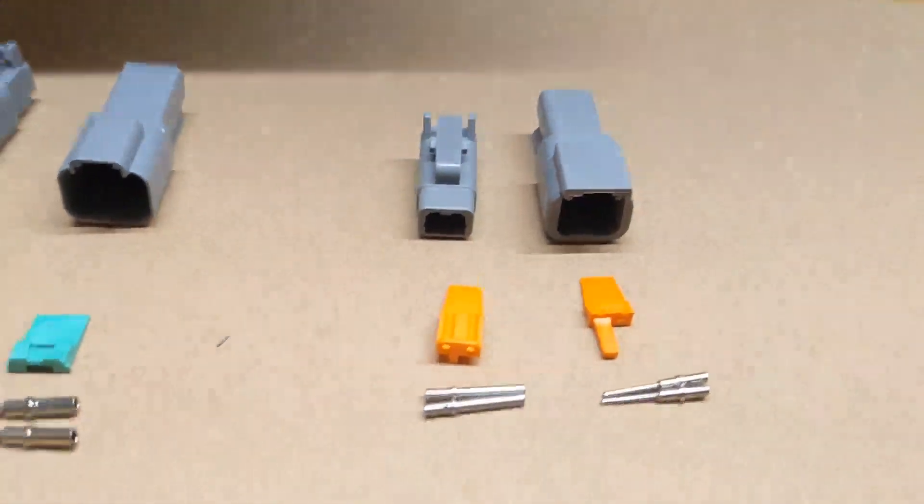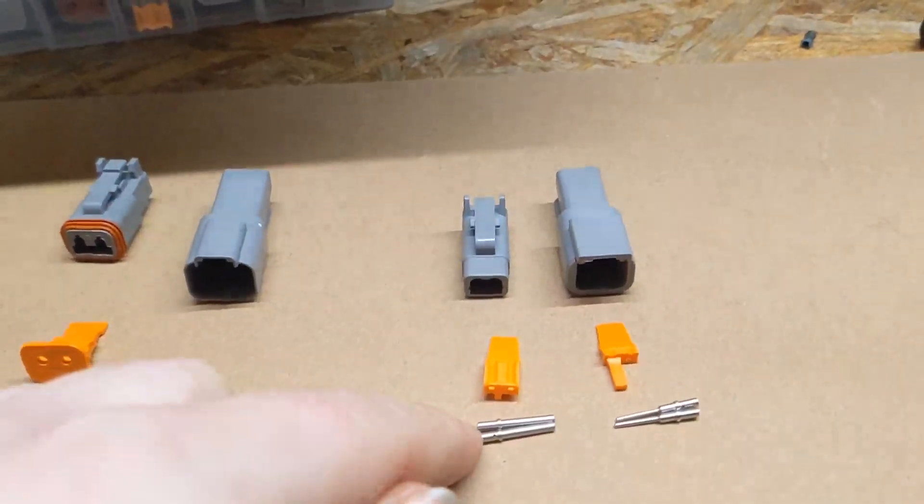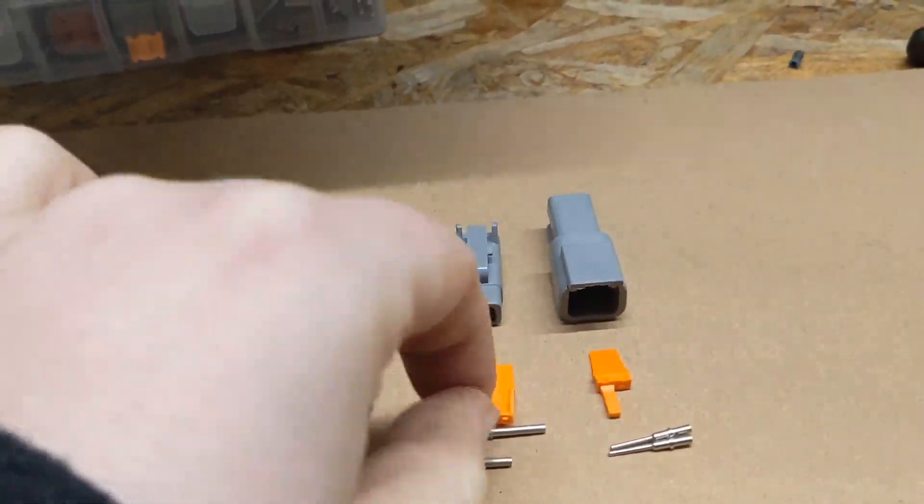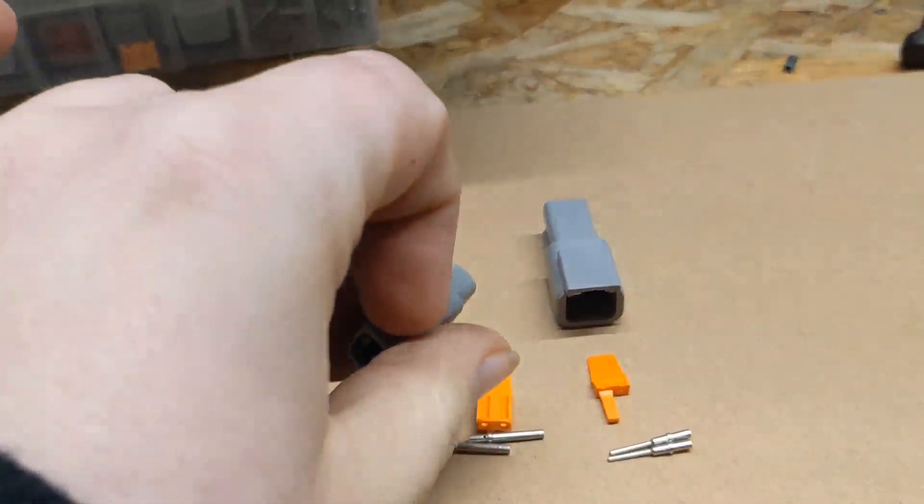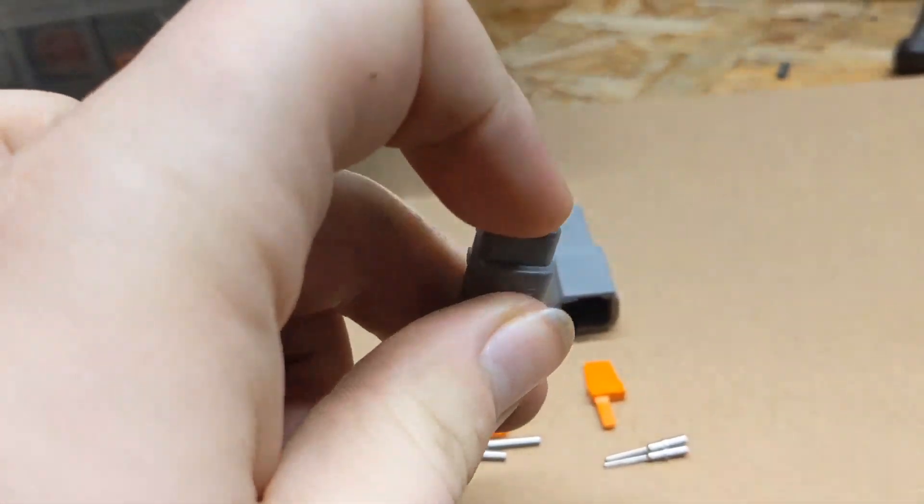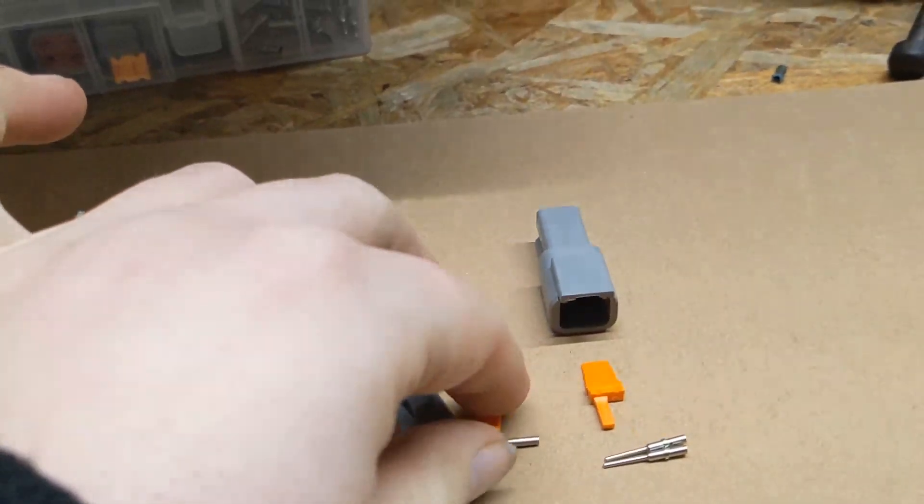They come in three different sizes, three different current ratings, and making a connector is nice and simple. You basically push your wire in, you crimp it.